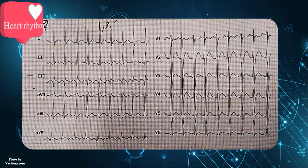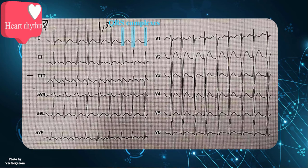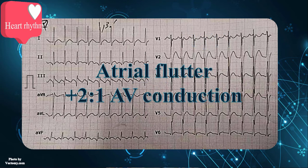Next is cardiac rhythm. There are inverted P waves at a rate of 335 beats per minute in inferior leads, forming a sawtooth pattern. The atrial activity is visible in V1 as well. In addition, the QRS complexes are narrow, regular, and uniform. The ratio of P waves to QRS complexes is 2 to 1.